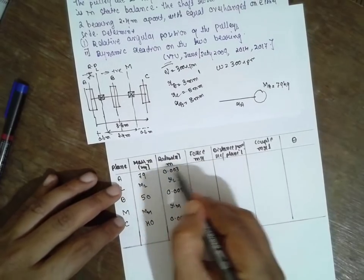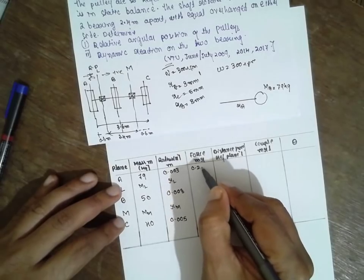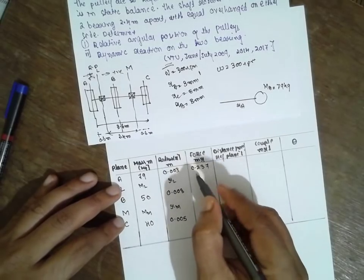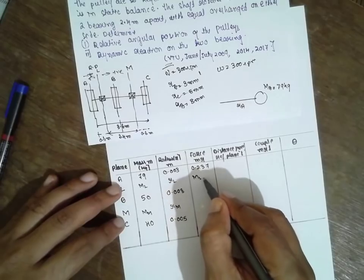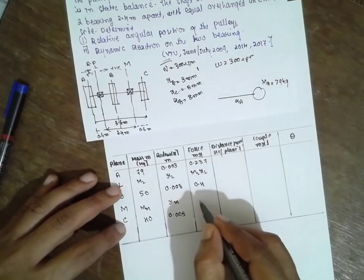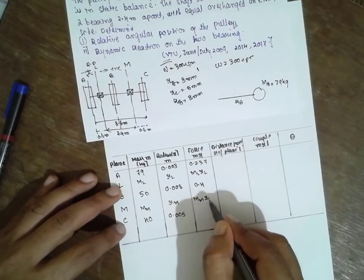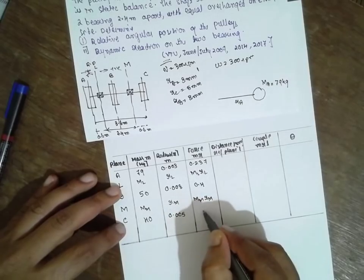The forces - just multiply these two things, you will get the force. MA times RA equals 0.237. ML times RL we have to find out. MB times RB equals 0.4. MM times RM we have to find out. If you multiply MC and RC, it becomes 0.2.